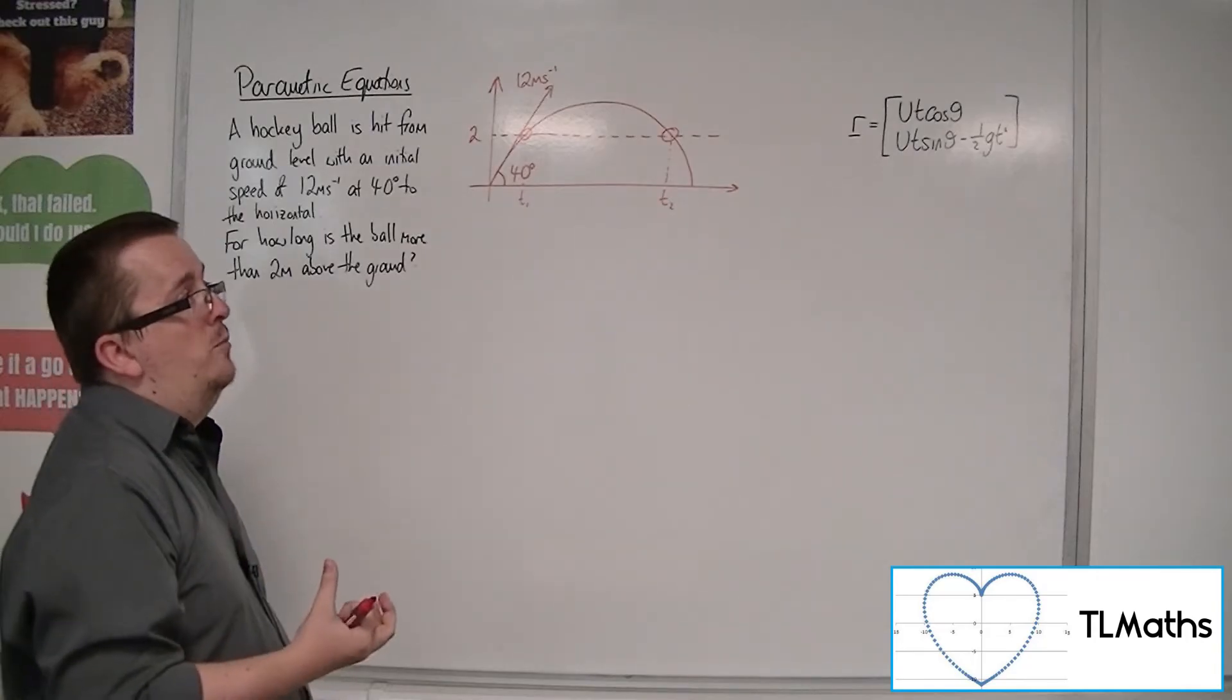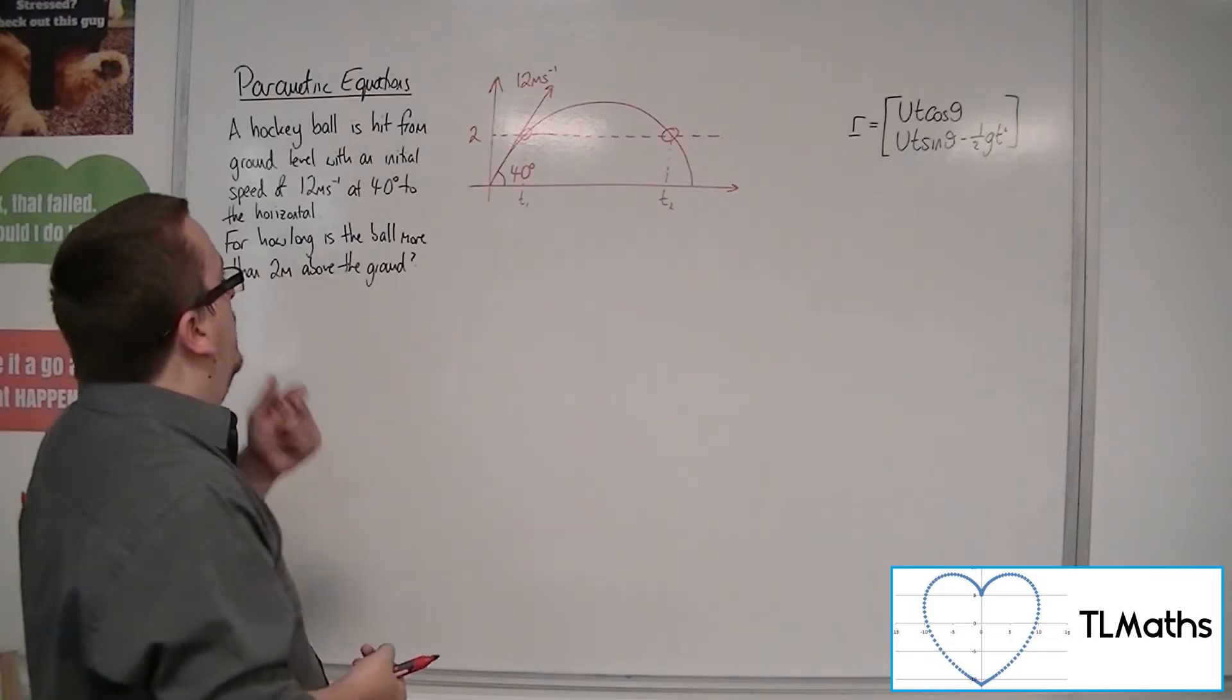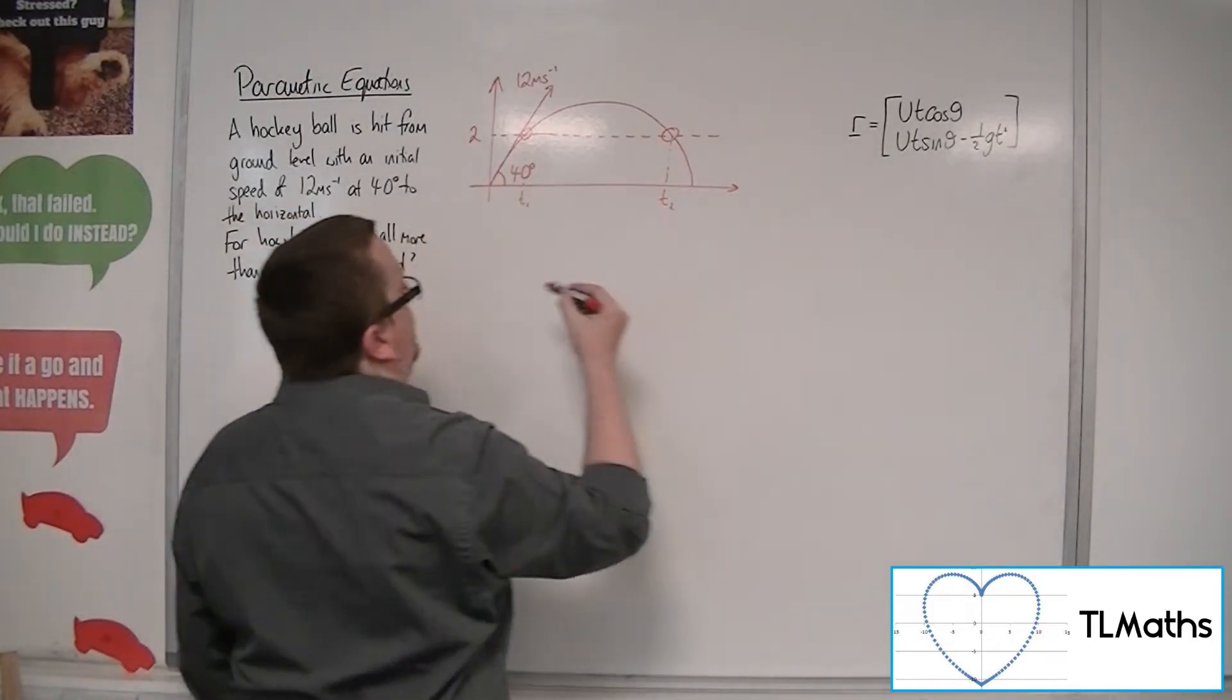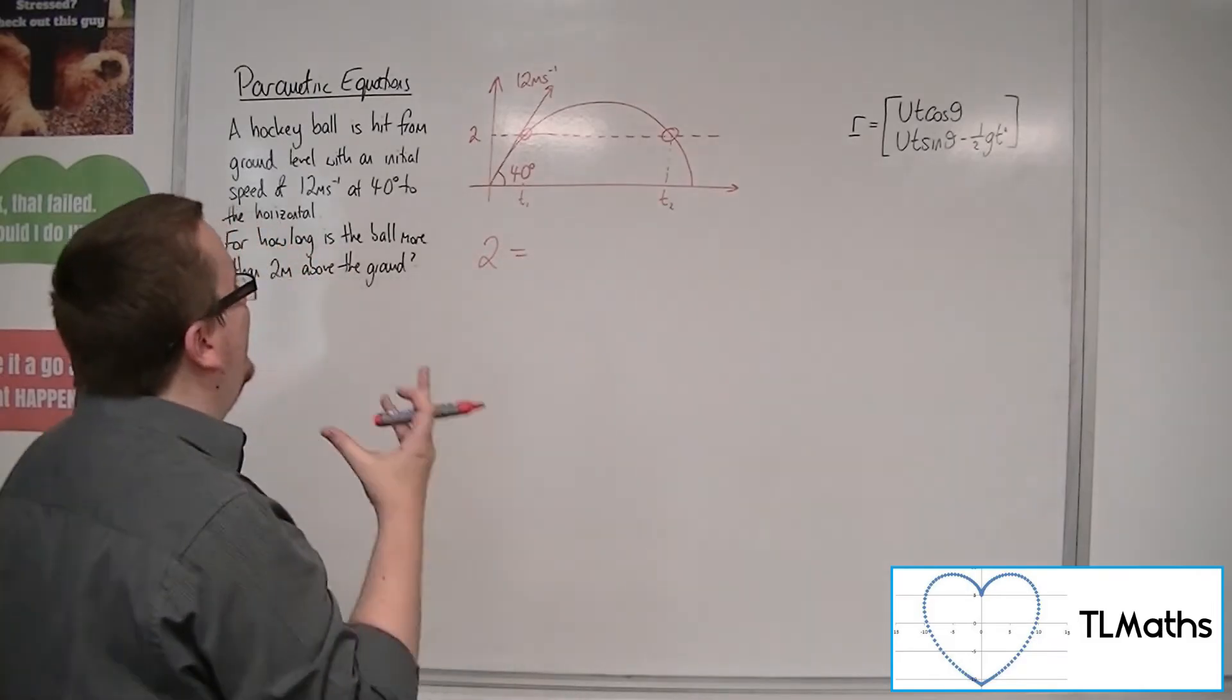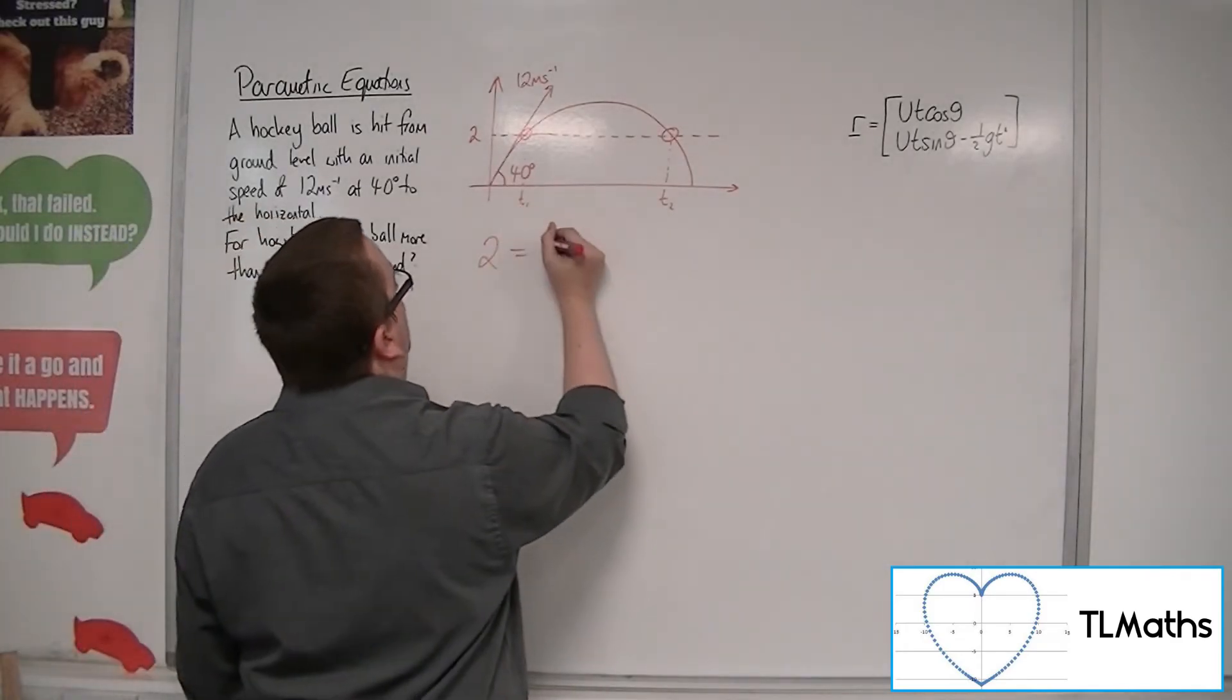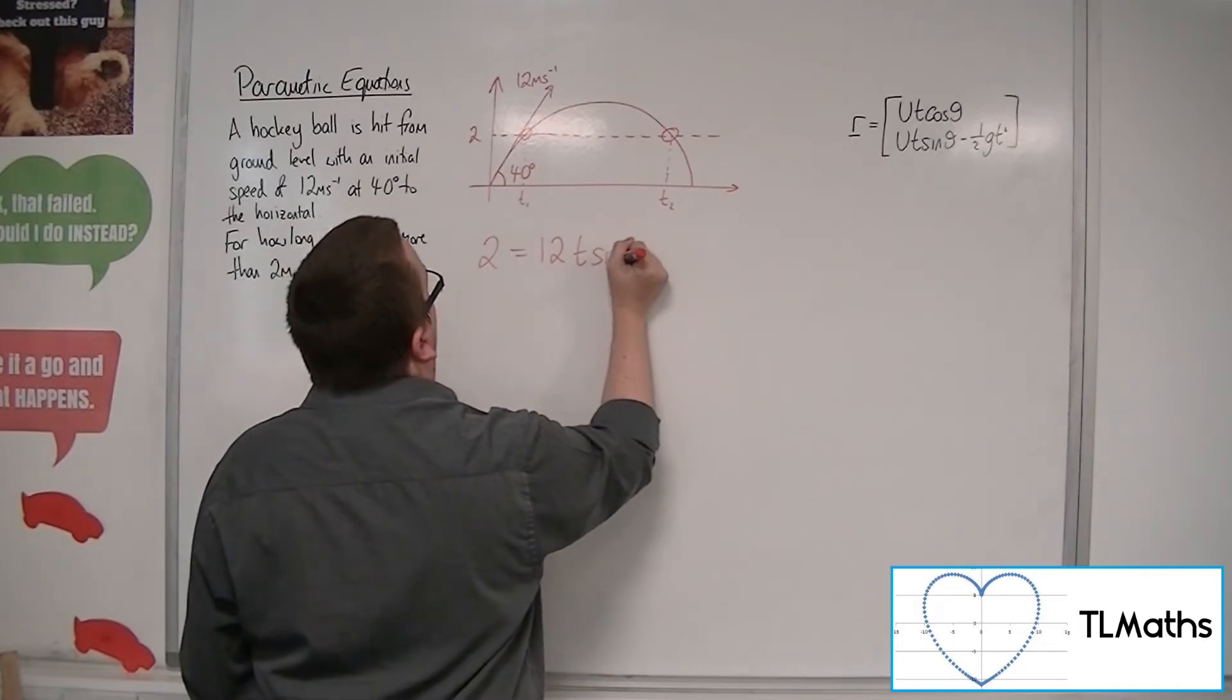Both coming from the SUVAT. So let's go through it then. So we want the y component to be equal to 2. So 2 is equal to ut sine theta. Now u is the initial velocity, so 12, t sine 40.